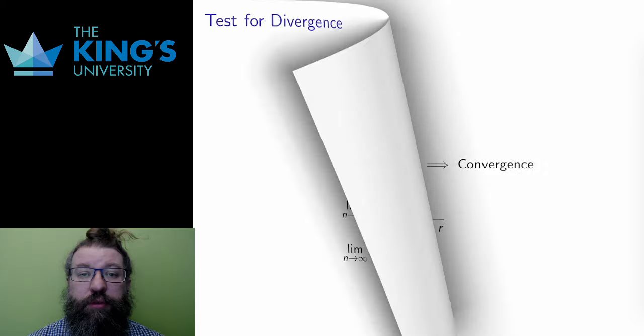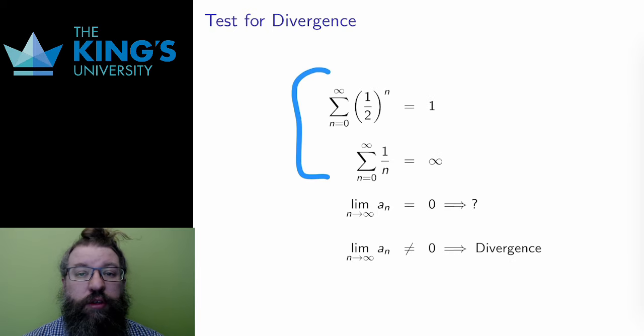First let me remind you of two examples, the geometric series for Zeno's paradox and the harmonic series. The geometric series with common ratio 1 half converged to 1, but the harmonic series diverged.